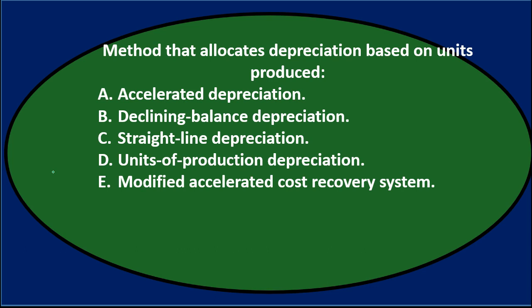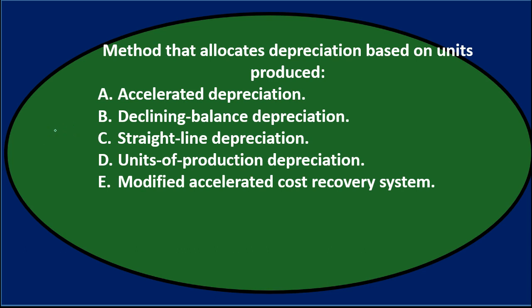Next question: Method that allocates depreciation based on units produced. A, accumulated depreciation; B, declining balance depreciation; C, straight line depreciation; D, units of production; E, modified accelerated cost recovery method.